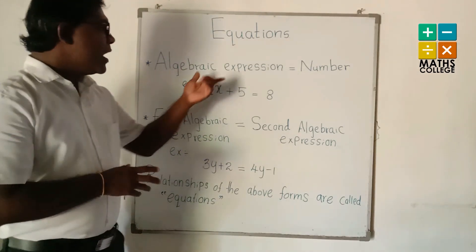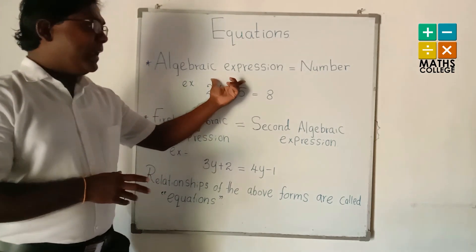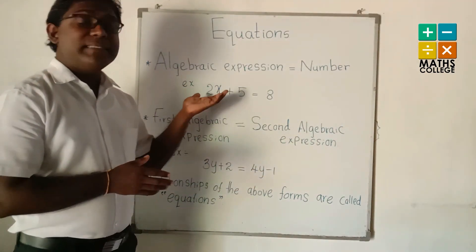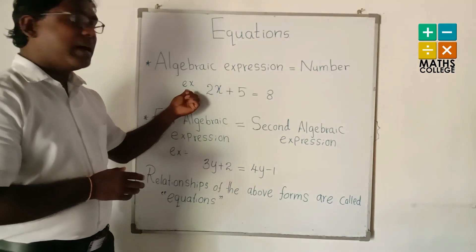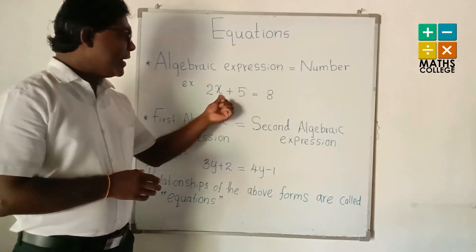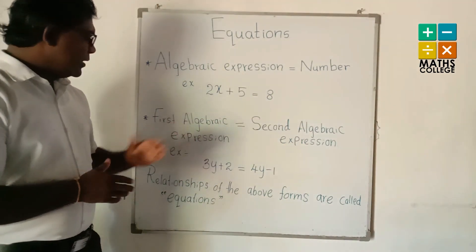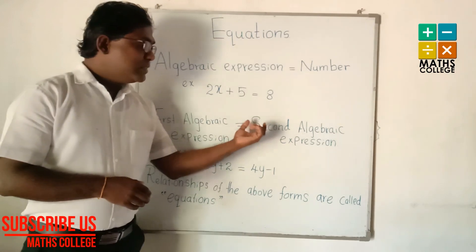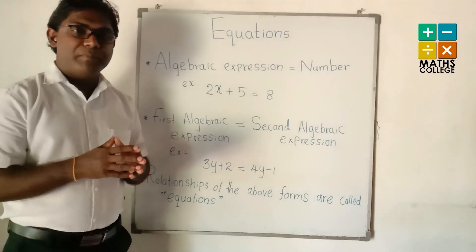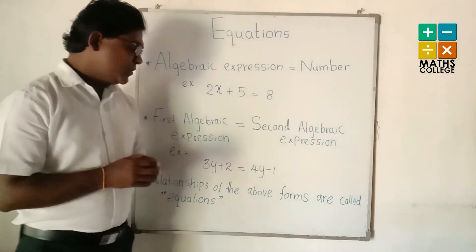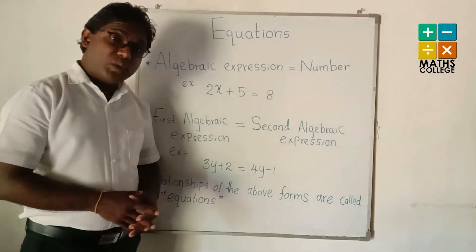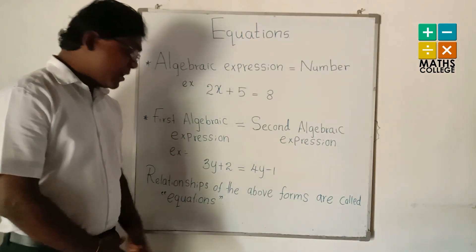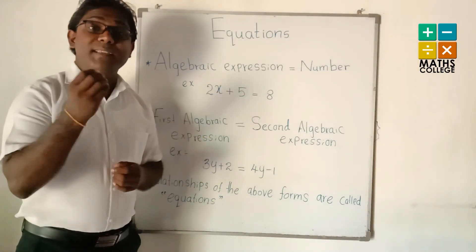An Algebraic expression related to a number can be called an Equation. For example, this is an Algebraic expression: 2x + 5 = 8. Another one: when a first Algebraic expression is related to a second Algebraic expression — the relationship of both — for example, 3y + 2 = 4y - 1. These relationships are called Equations.